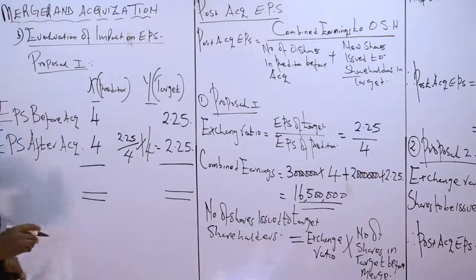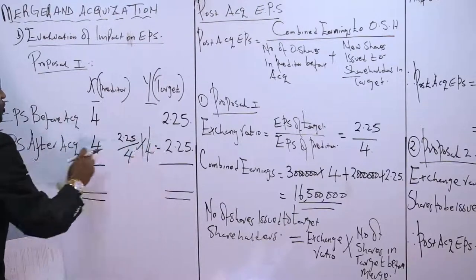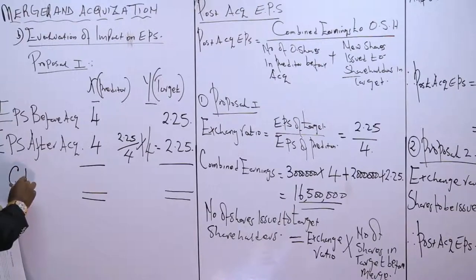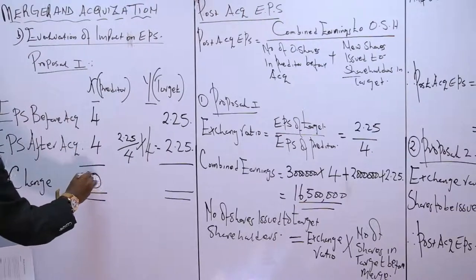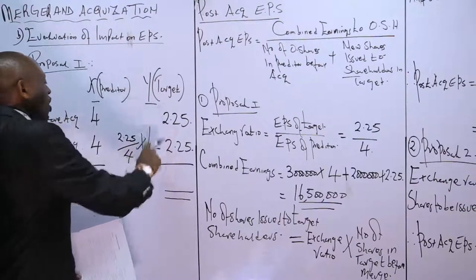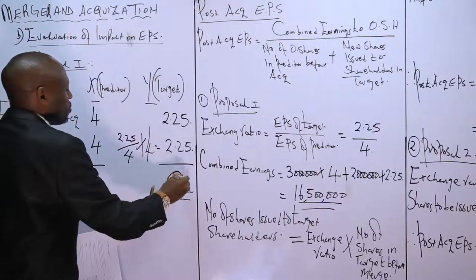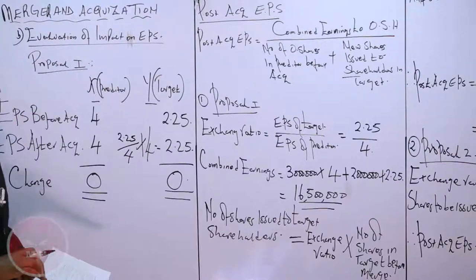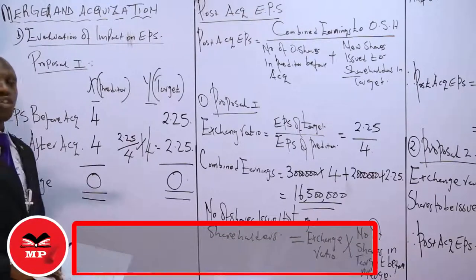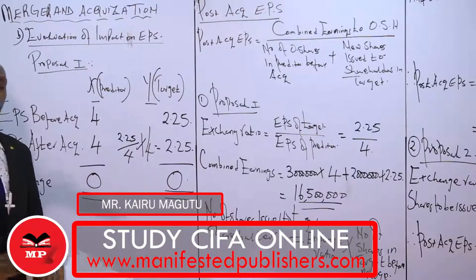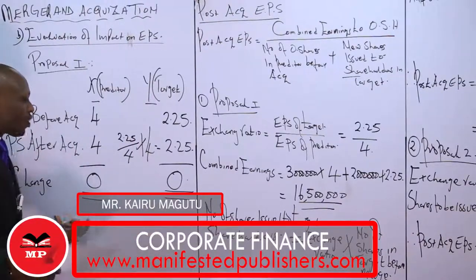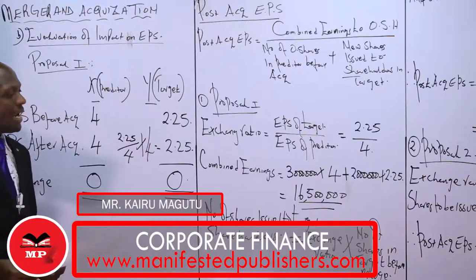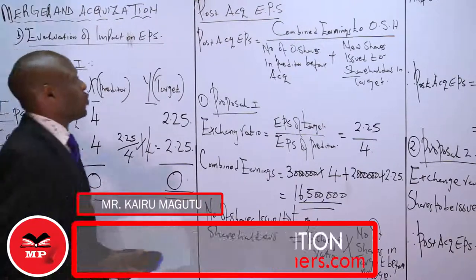Comparing EPS before and after the acquisition for both companies, there is no change. X had four before and four after; Y had two point two five before and two point two five after. When EPS is used to set the exchange ratio, there is no dilution in EPS for shareholders of either company. We can confirm this in our computation.